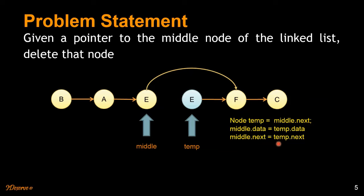So we will copy middle.next equals temp.next. We have to point this node's next link to F. And finally we will delete this temp node, which is basically your duplicate node. That's it. That's the solution for this problem.